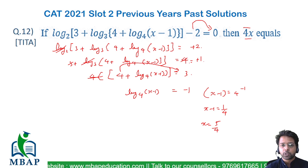Now you have the value of x as 5/4. The question asks for 4x. 4 times 5/4 equals 5. Hence, the answer is 5.